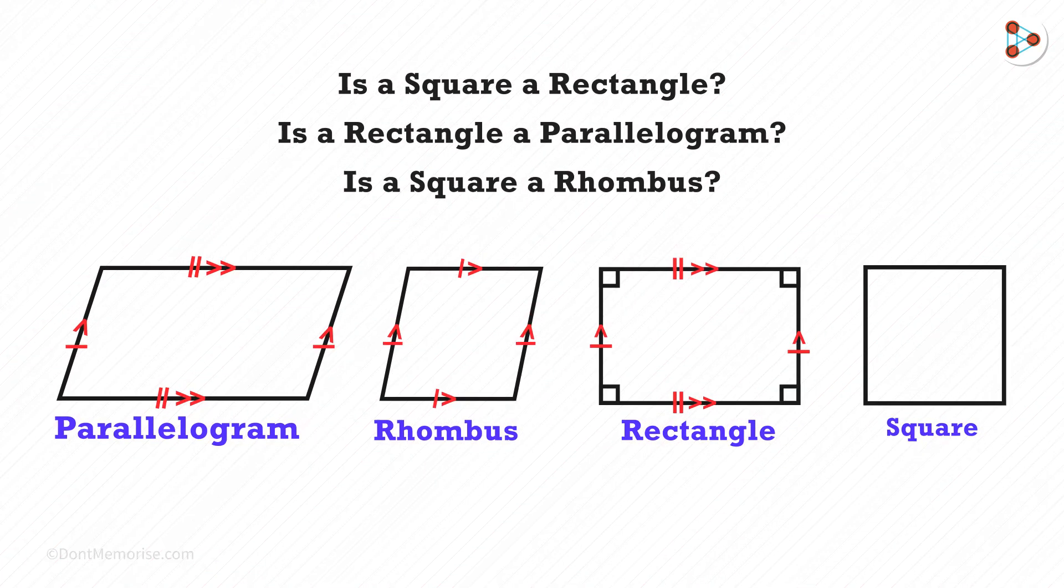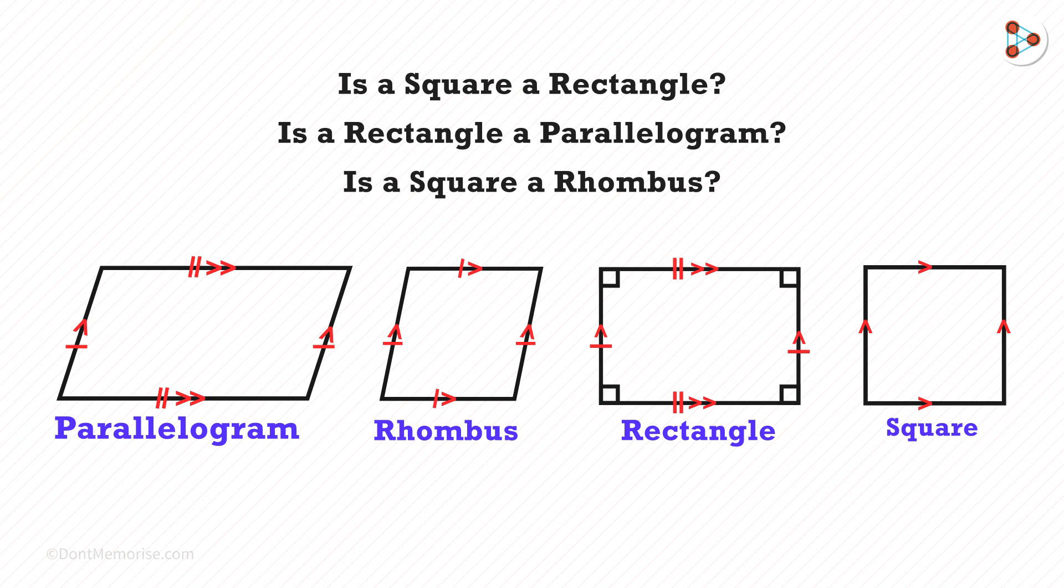What's a square then? A square is a quadrilateral with opposite sides parallel and equal and all its angles are equal to 90 degrees with all equal sides.